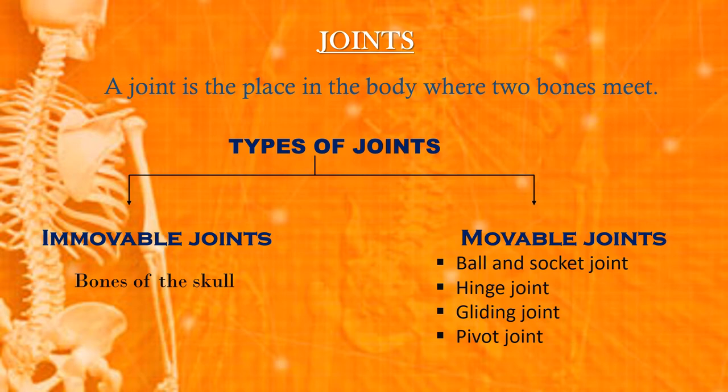Immovable joints are those which we cannot move, and movable joints are those which can be moved. Since the bones of the skull are fixed, the joints between them are immovable. Joints in other parts of the body are movable, and are of four types.